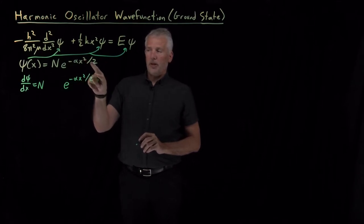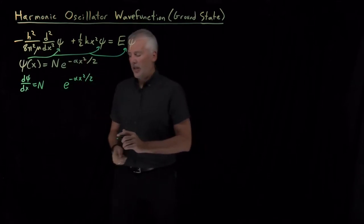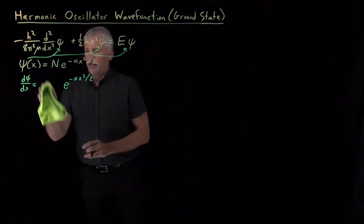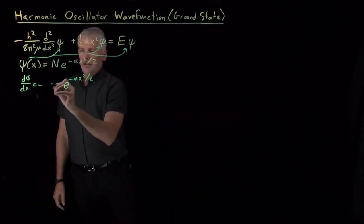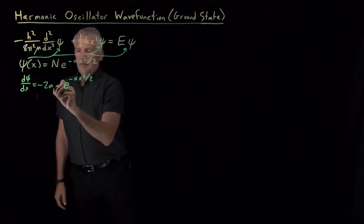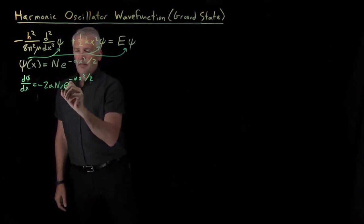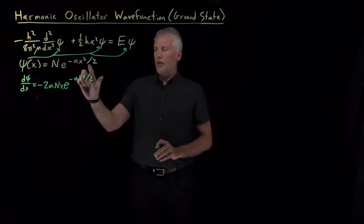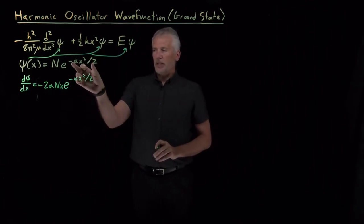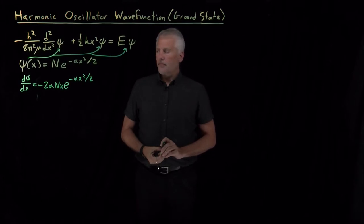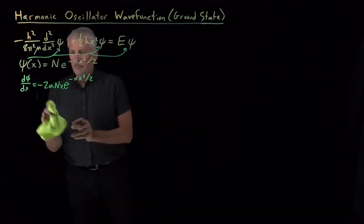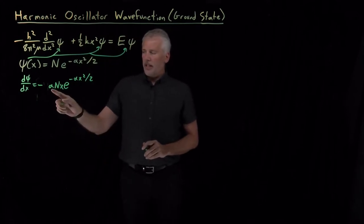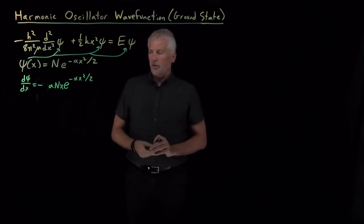So the 2 from the x squared and the 2 from divided by 2 cancel each other, and leaving room for the negative sign, that gives us minus alpha times x times e to the minus alpha x squared. So we've pulled down an extra factor of minus alpha x by taking the derivative of this exponent.